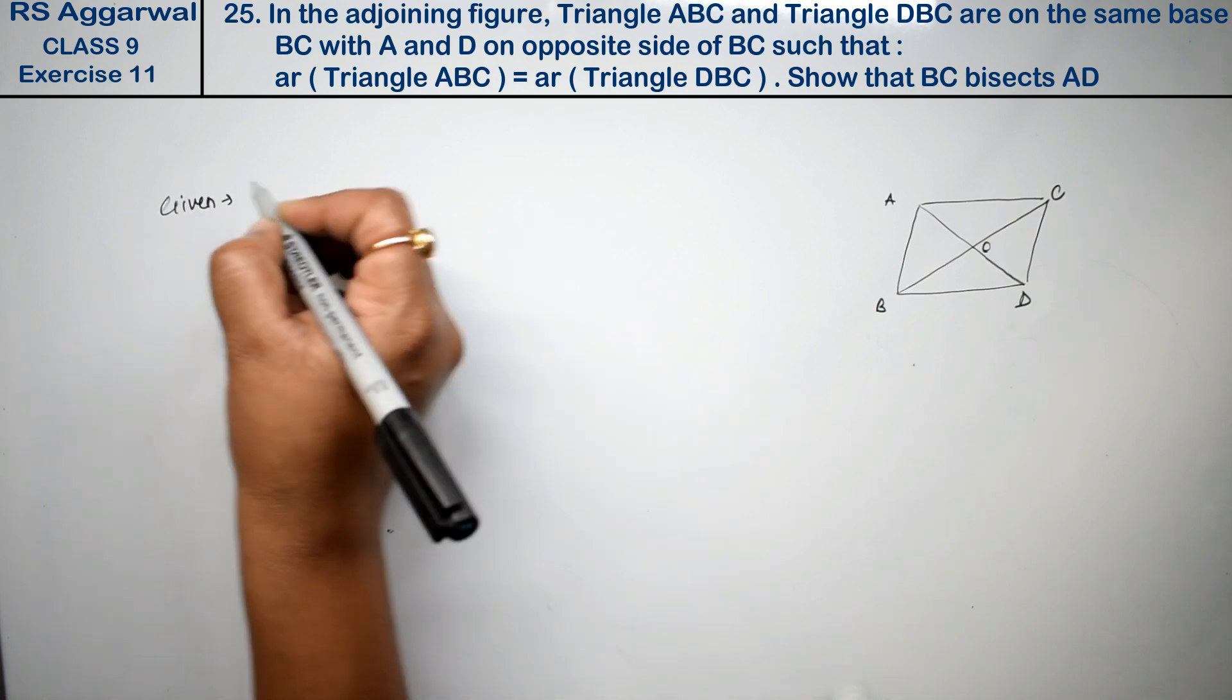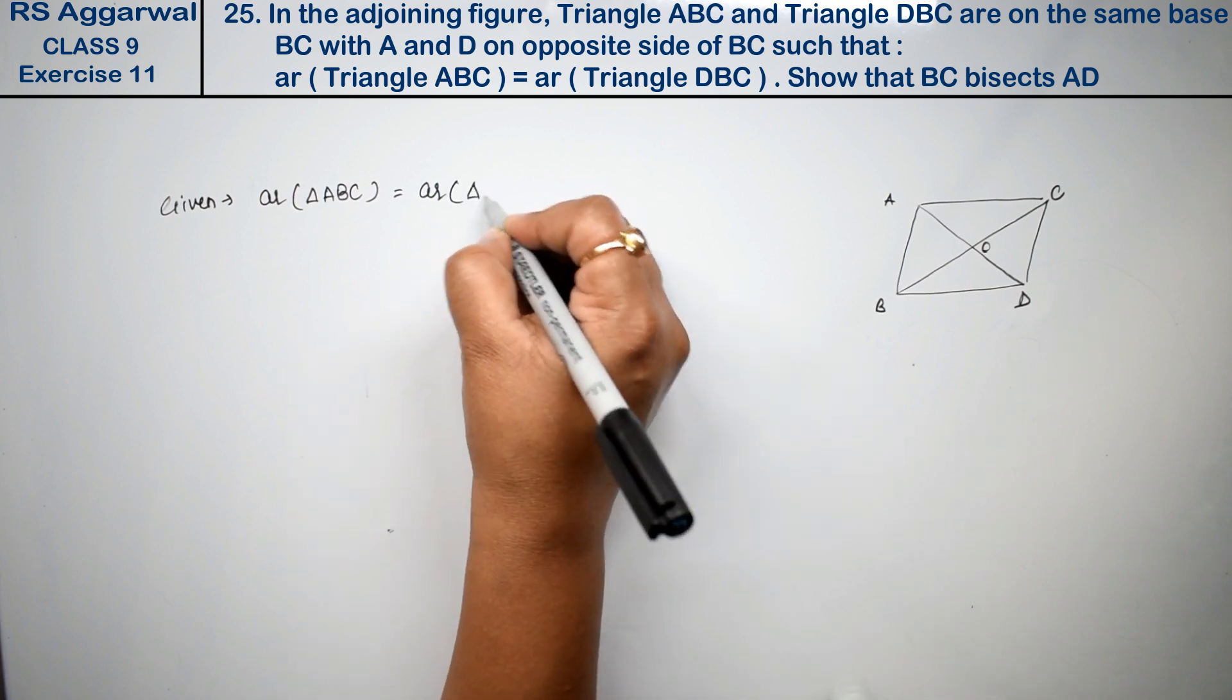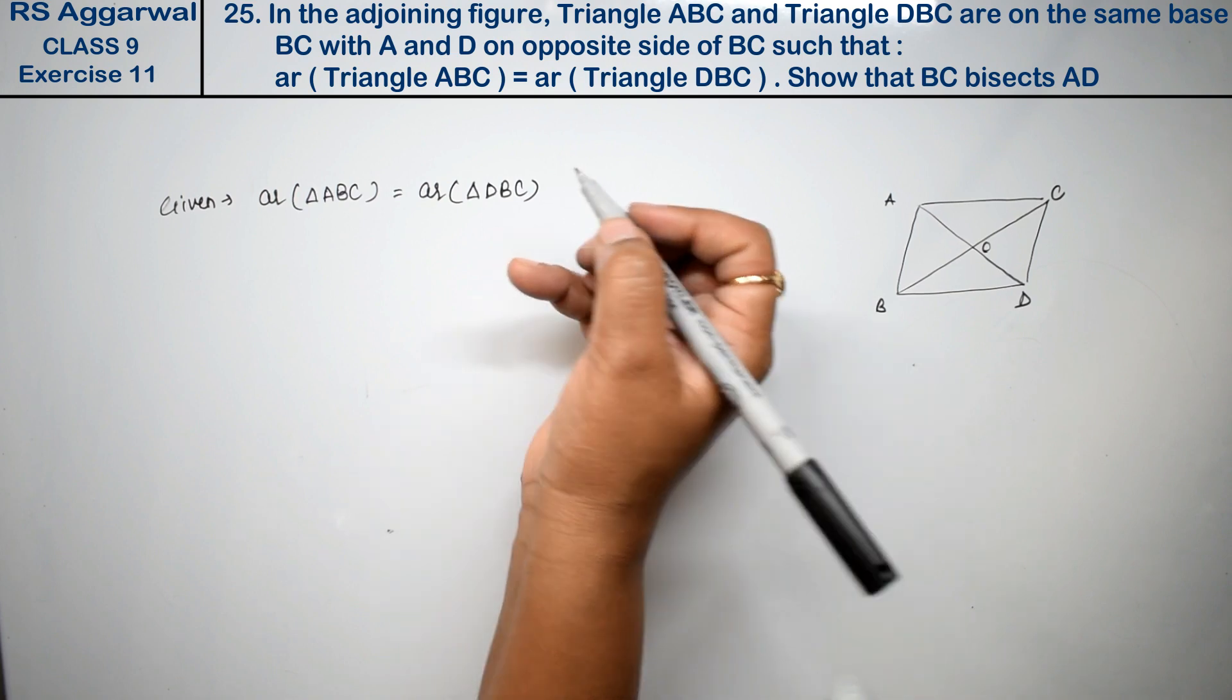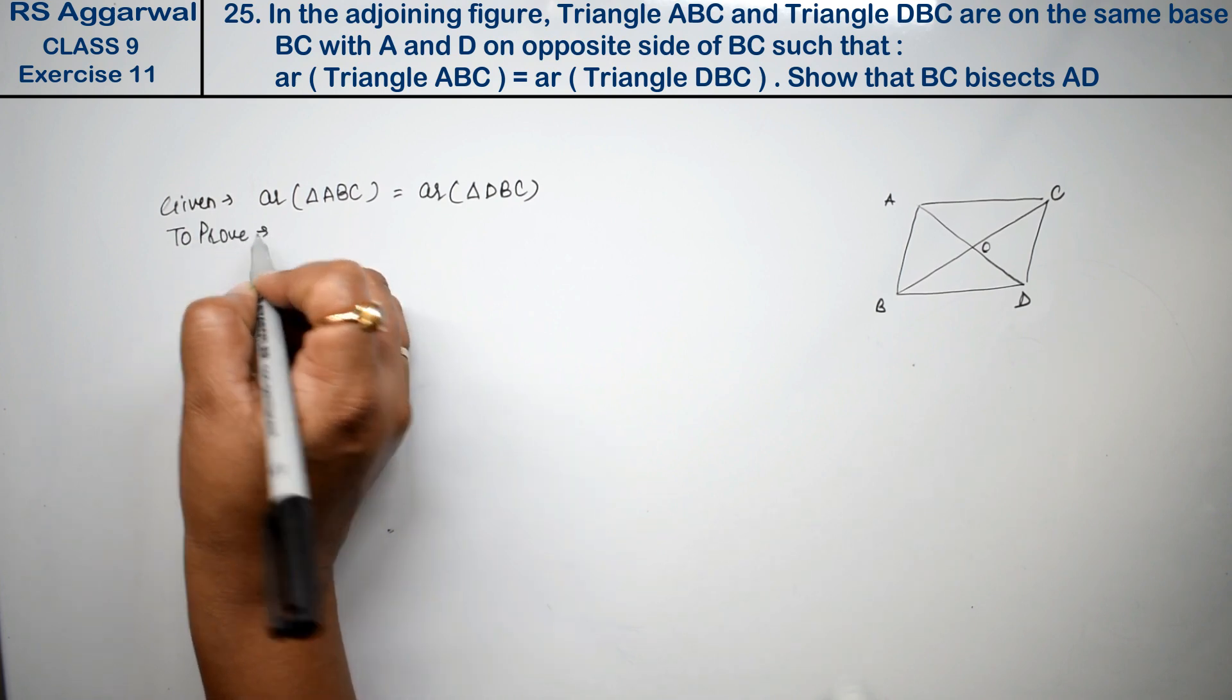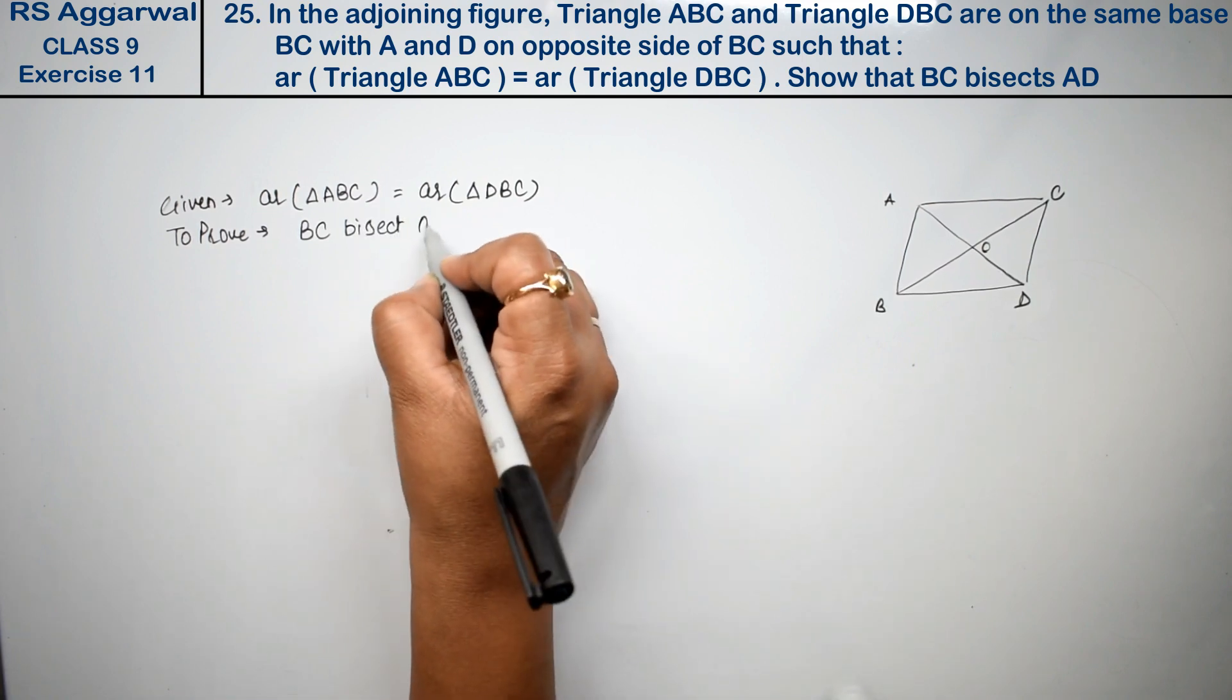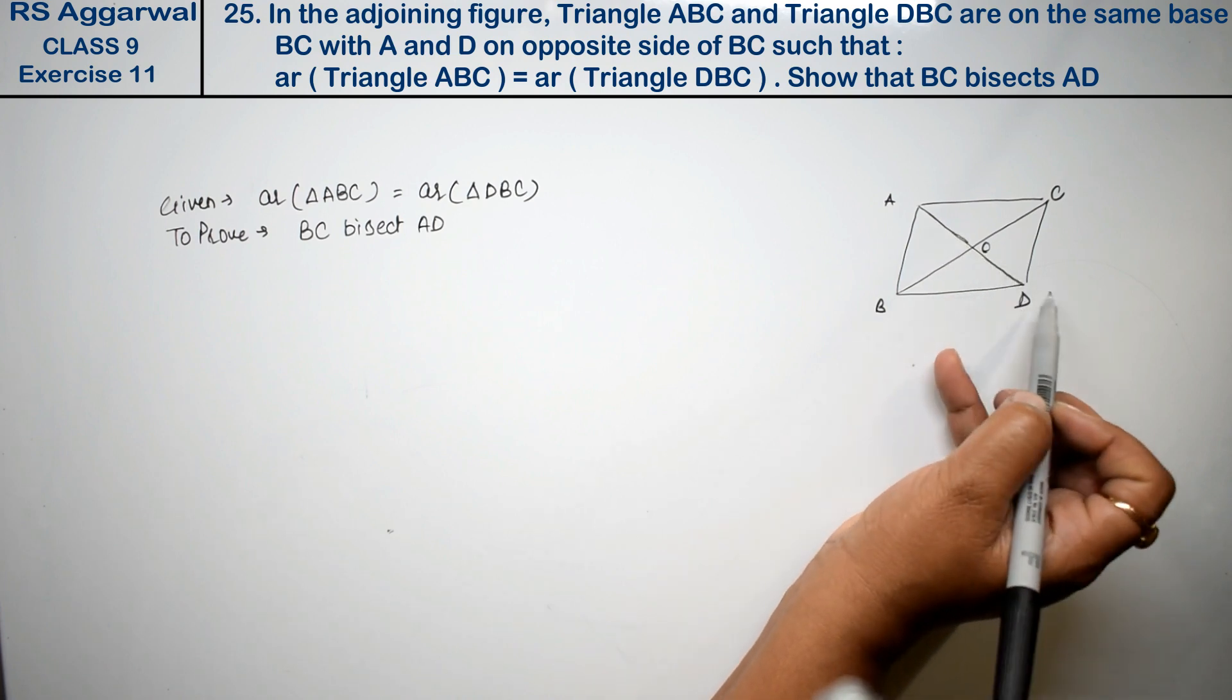Area of triangle ABC equal area of triangle DBC. We have to show that BC bisects AD.